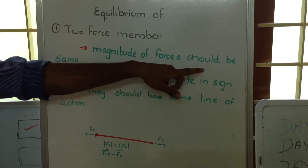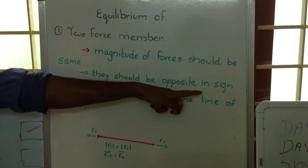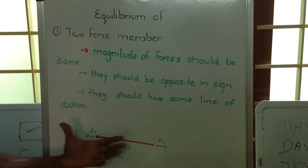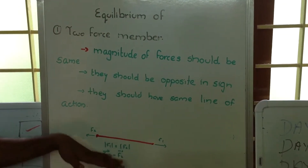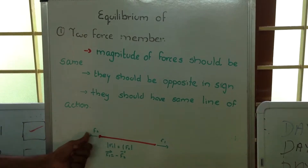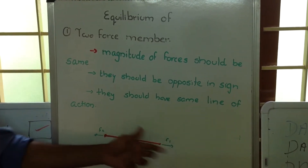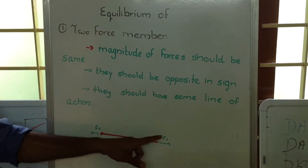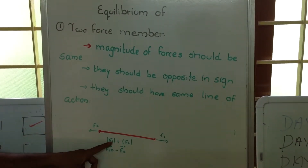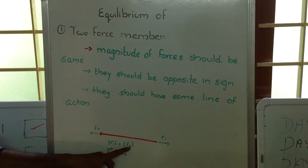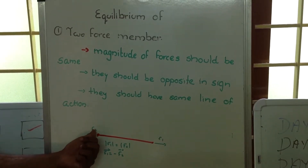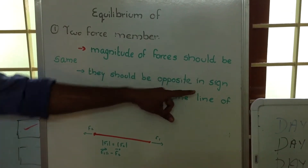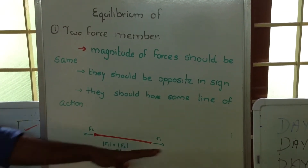The first condition says the magnitude of forces should be the same. The forces should act in opposite directions, and they should act along the same line. So if we have a link with two forces F1 and F2 acting along it, the first condition is that F1 and F2 should have the same magnitude — that is, magnitude of F1 equals magnitude of F2. For example, if F2 is 500, then F1 will also be 500.